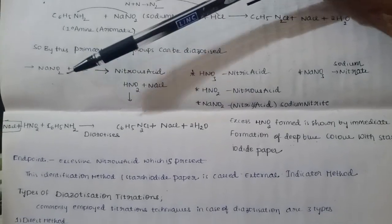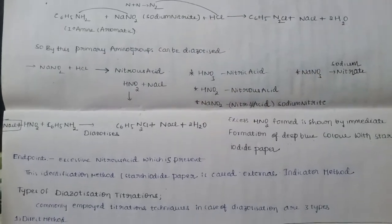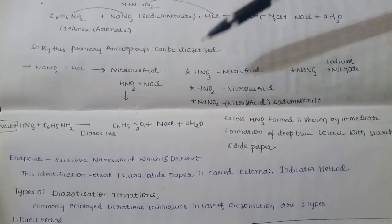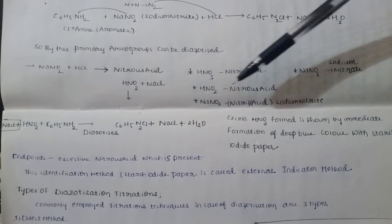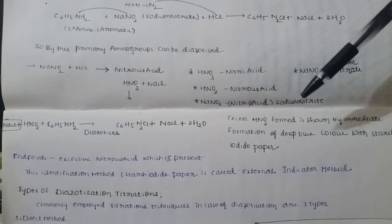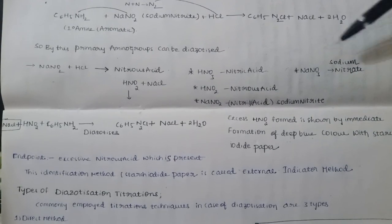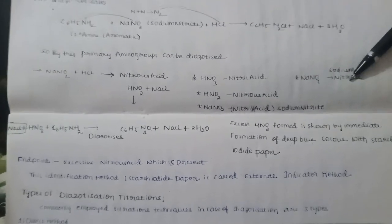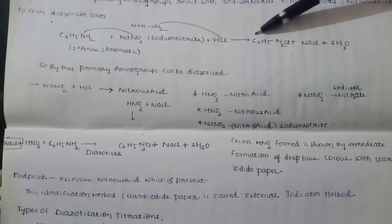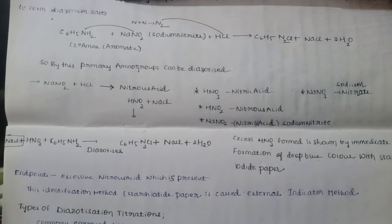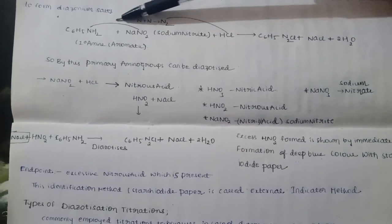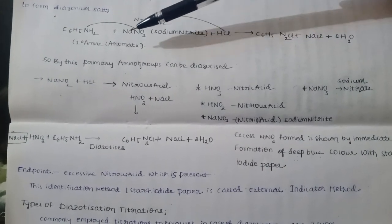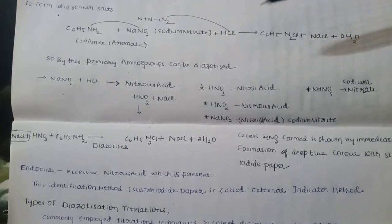Here you can see the difference: HNO3 is nitric acid, HNO2 is nitrous acid, NaNO2 is sodium nitrite, and NaNO3 is sodium nitrate. C6H5N2Cl is the diazonium salt formed.